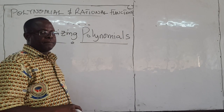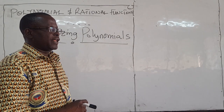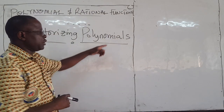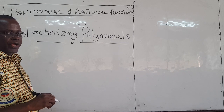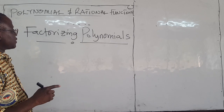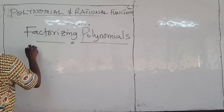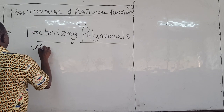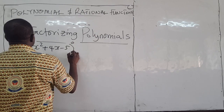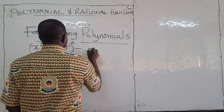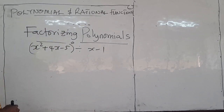Hello guys. In this lesson we want to learn how to factorize polynomials. Recall that in the previous lesson we had an example where we said that if you divide x squared plus 4x minus 5 by x minus 1, you get x plus 5.